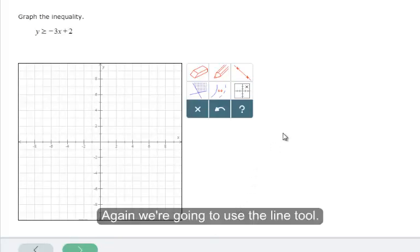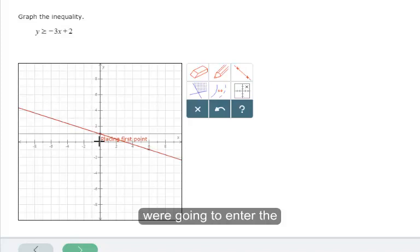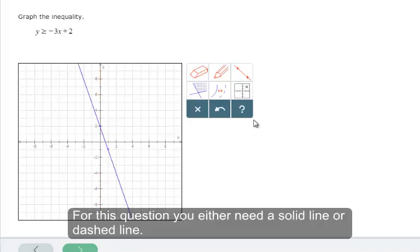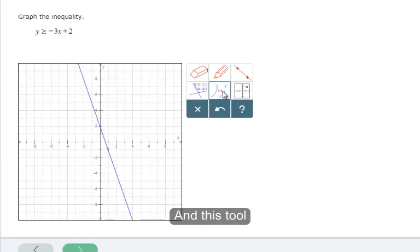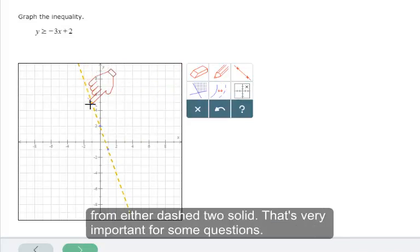Again, we're going to use the line tool and we're going to enter the boundary. For this question, you either need a solid line or a dashed line. And this will change it back and forth. You have to click on the tool and then click on the line. And it will change it from either dashed to solid. That's very important for some questions.